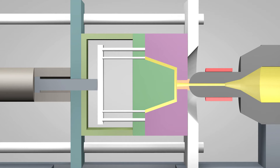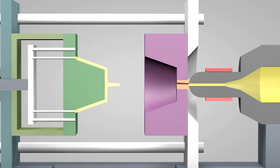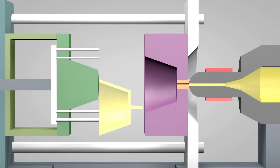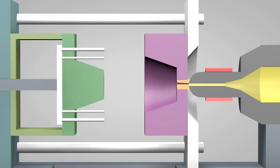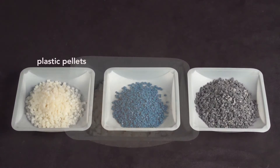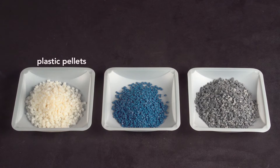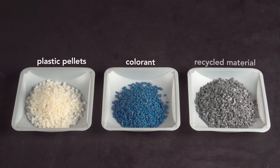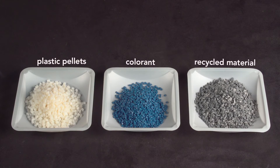The plastic solidifies in under a minute. The mold opens and the part is ejected. The mold then closes and the process repeats. All injection molded objects start with plastic pellets, which are a few millimeters in diameter. They can be mixed with small amounts of pigment, called colorant, or with up to 15% recycled material, then fed into the injection molding machine.